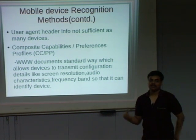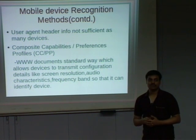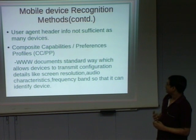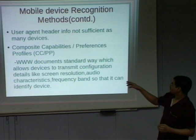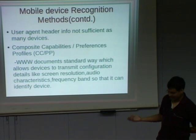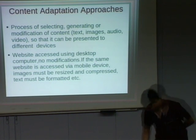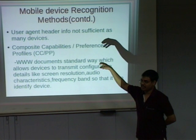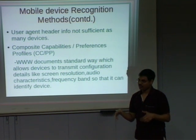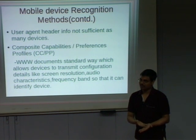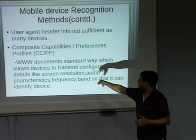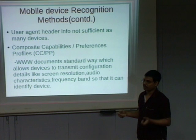As many new target devices are coming, this user agent data is not sufficient to recognize the device. So they found new standards like composite capabilities and preference profiles. The W3C web document standard says that devices are allowed to transmit configuration details like screen resolution, audio characteristics, and what frequency band they can accept — so that the server can identify the device and send content accordingly. Previously the HTTP user agent header could only identify hardware, operating system, and browser type, but with so many devices now, those three things are not sufficient. So new standards like composite capability profiles were introduced, including screen resolution, audio support, and more.